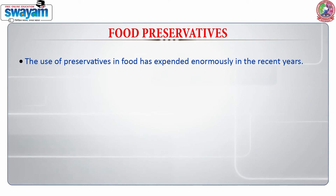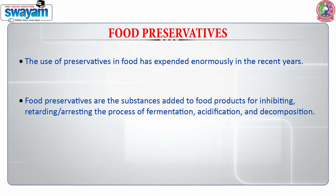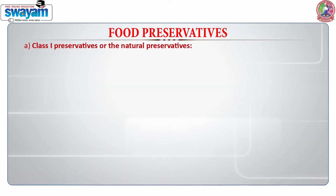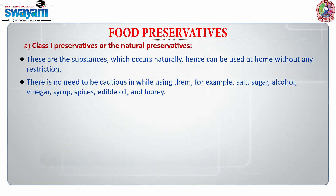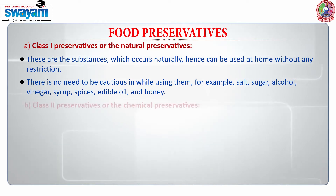The use of preservatives in food has expanded enormously in recent years. Food preservatives are substances added to food products for inhibiting, retarding, or arresting the process of fermentation, acidification, and decomposition, keeping food safe for longer durations. Food preservatives can be classified into two classes based on their sources. Class 1 are natural preservatives — substances which occur naturally and can be used at home without restriction. Examples include salt, sugar, alcohol, vinegar, syrup, spices, edible oil, and honey.